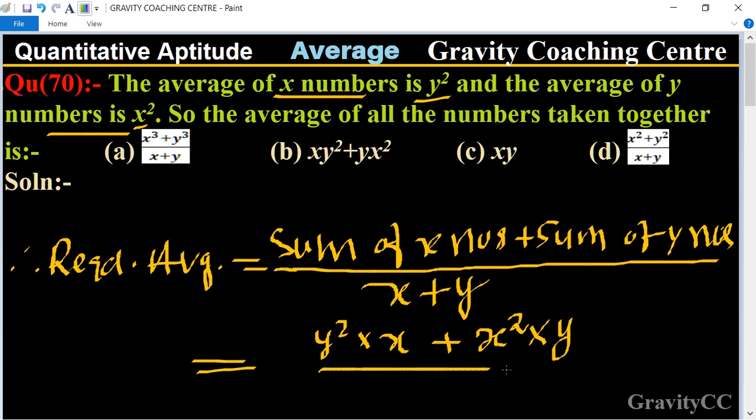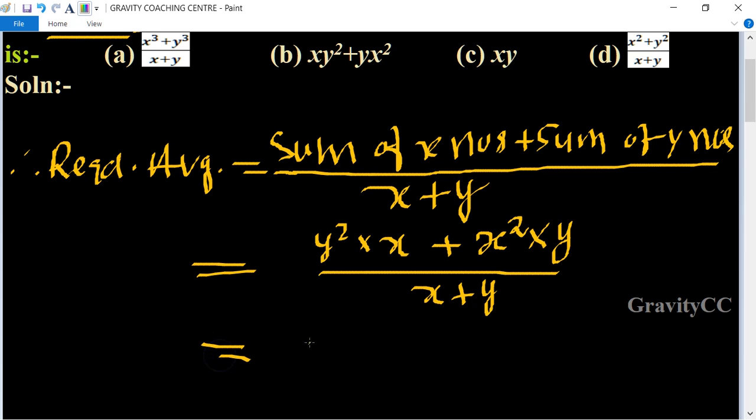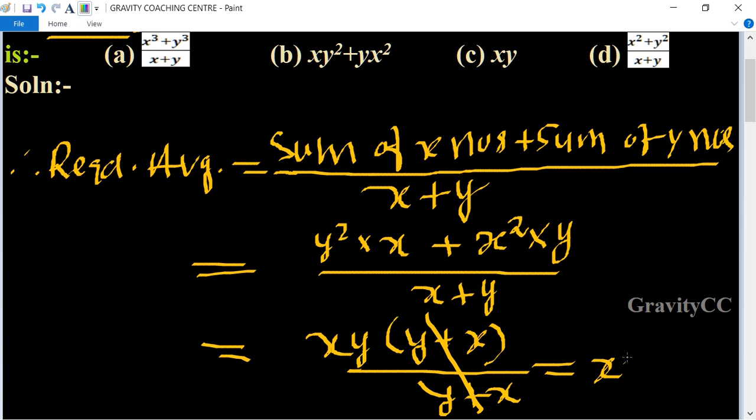So now we take xy as common from the numerator. xy, so it will become y plus x upon y plus x. Y plus x, y plus x is cancelled, so xy is the required answer.